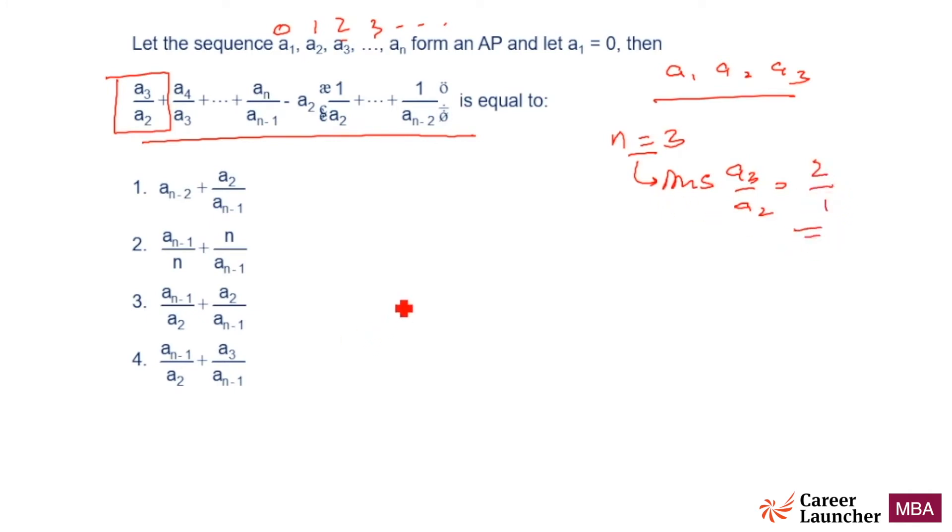Now substitute and check out, remember N is equal to 3. So what is choice 1? This becomes A1 plus A2 upon A1, right? Sorry, A2 upon A2, I am sorry. So what does it become? A2 by A2, A2 is equal to 1. A1, let me write down here, 0, 1, 2. A2 is 1, so A2 by A2 is 1, so A1 is 0, which is equal to 1. But we want the value to be 2, so choice 1 is incorrect.